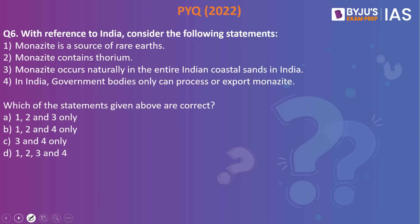Next question — a previous year 2022 question: with reference to India, which statements about Monazite are correct? Statement one: Monazite is a source of rare earth. Statement two: Monazite contains thorium. Statement three: Monazite occurs naturally along the entire Indian coastal sands. Statement four: in India, only government bodies can process and export Monazite. The answer is 1, 2, and 4. The third statement is incorrect because Monazite is found along the Kerala coast, Tamil Nadu coast, and in Odisha — not along the entire coastal sands of India.